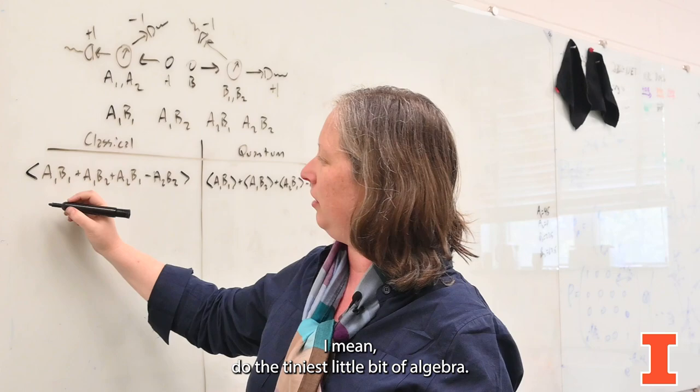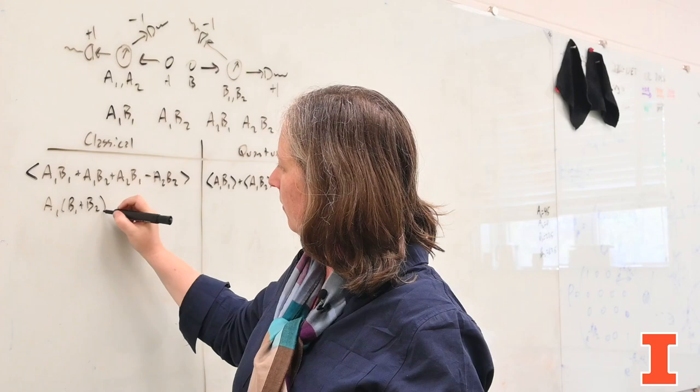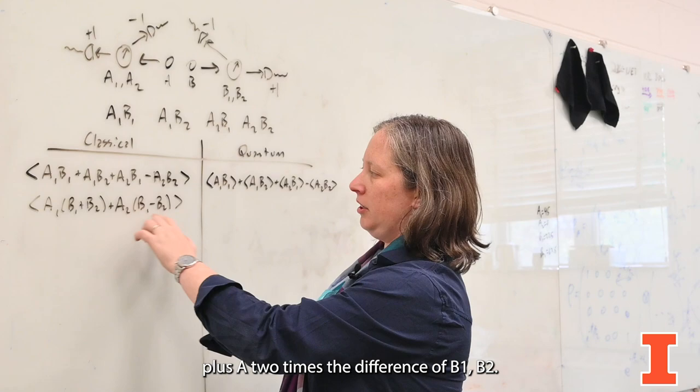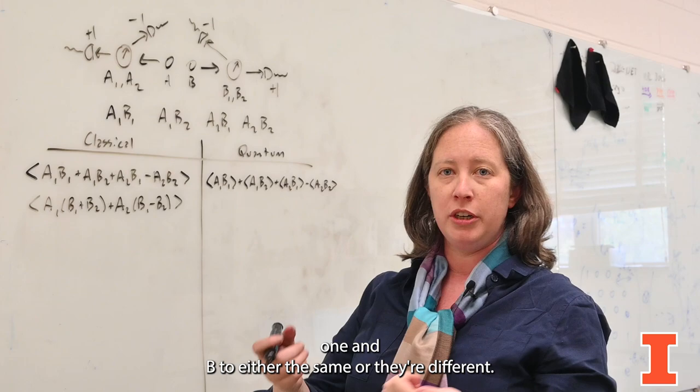So let's see what's different here. On the classical side, I'm going to rewrite this. I'm going to do the tiniest little bit of algebra. All I've done here is regathered my terms so that I have A1 times the sum of B1 and B2, plus A2 times the difference of B1 and B2.